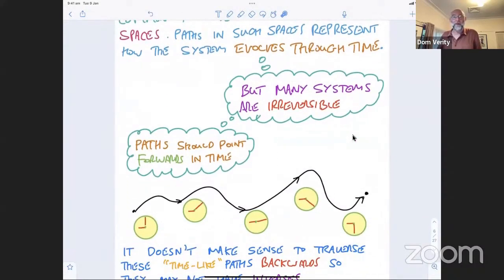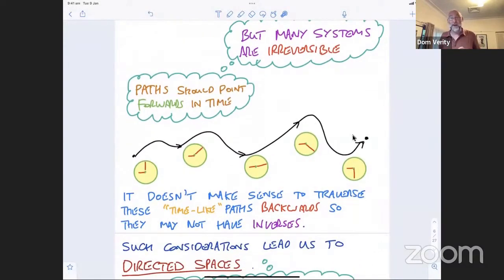So we have a picture like this where maybe one of them is that we think of paths which are time-like. And time-like paths only transit one direction through time. Or we might think of paths in which, as we transit along the path, some kind of resource is being used up. So if we're using up a resource, of course, we can't back along the path because that would correspond to creating a resource. So it doesn't make sense to traverse backwards through time.